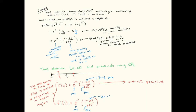Let's move on to the next region, from one-half to infinity. I'll pick the easiest test point, x equals one. Plugging into the first derivative, we get one minus two times one divided by two times the square root of one. E to any power is always positive. The square root of one is positive. In the numerator we get one minus two, which is negative. So overall we have a negative quantity. The first derivative is positive from zero to one-half, and negative from one-half to infinity.